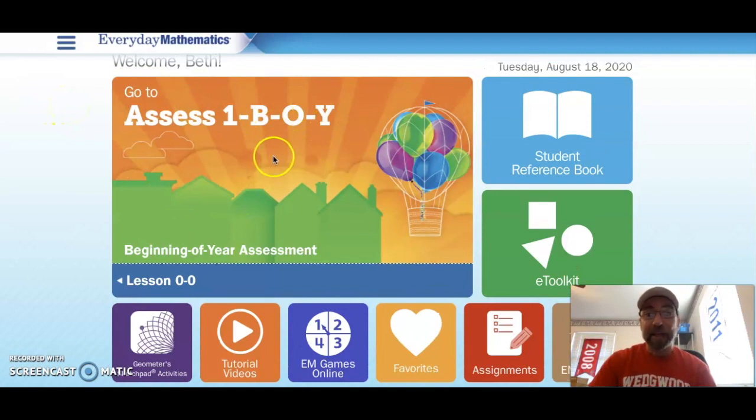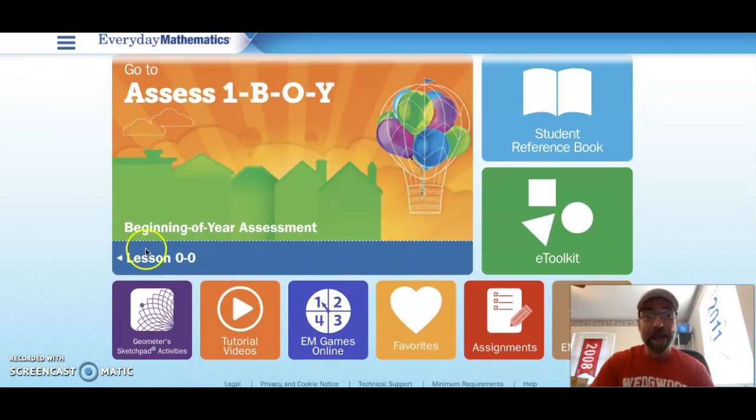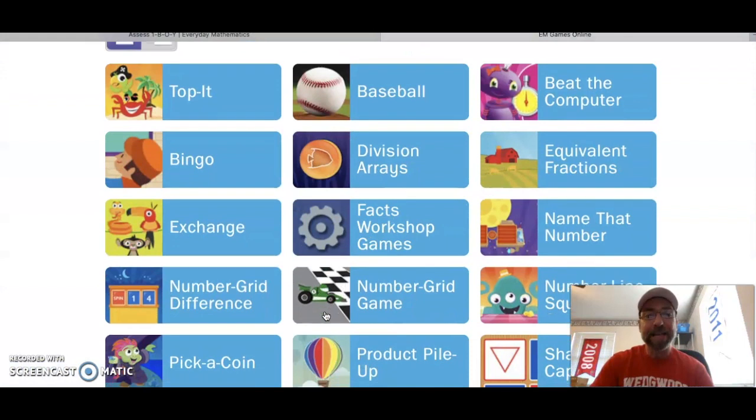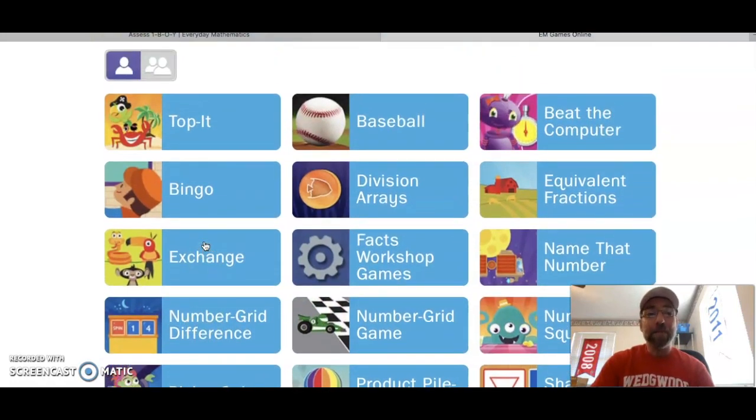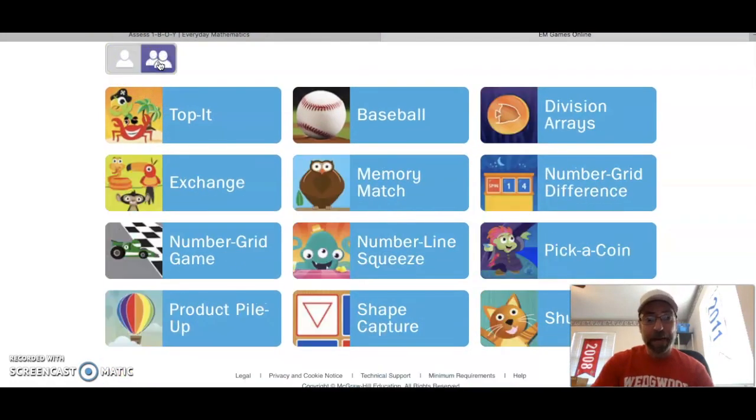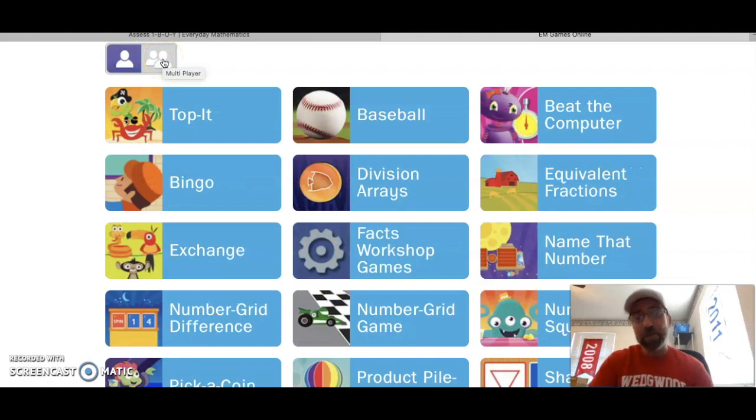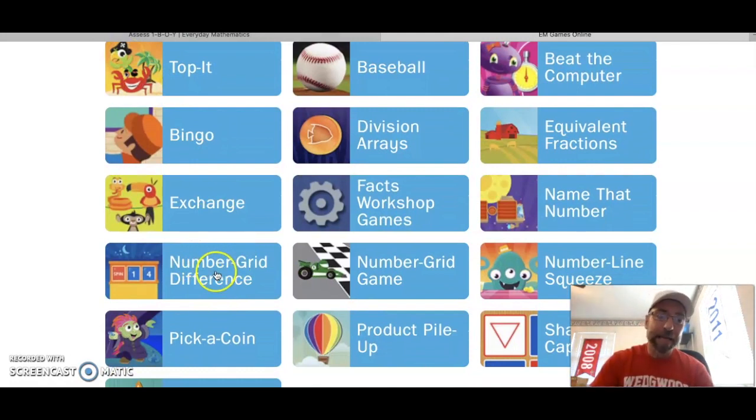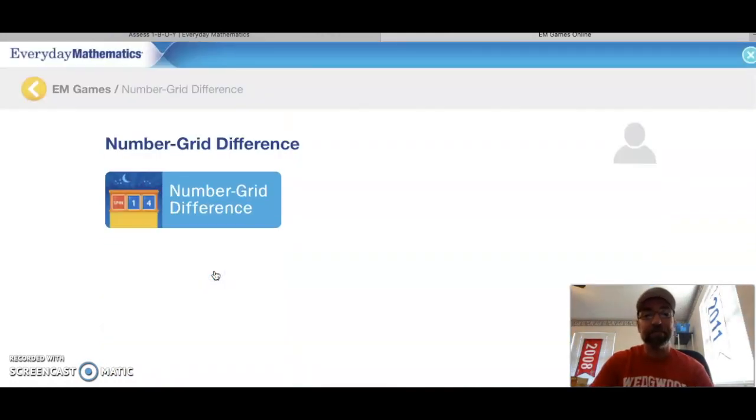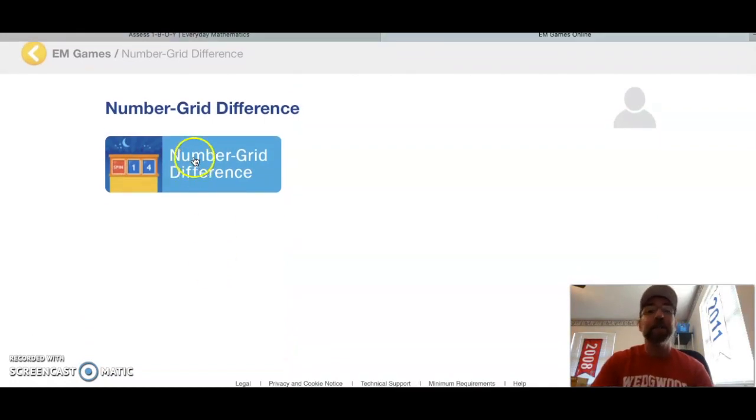Once I'm in ConnectEd and I launch my journal, you're going to notice that on every one of your lesson pages, at the bottom, you will see the Everyday Math games online there with the spinner. When I click on that, it's going to bring up all of my different games. Today, we're going to be playing the Number Grid Difference game. Now the Number Grid Difference game is either a one-player game or a two-player game. Let's go ahead and hit the Number Grid Difference game.